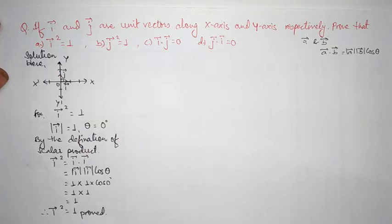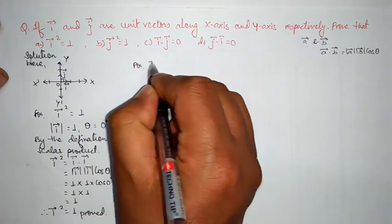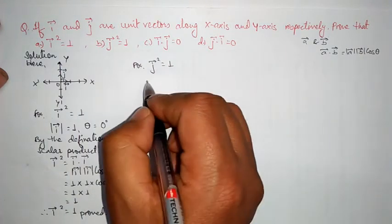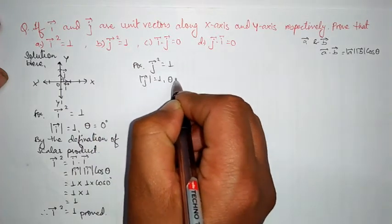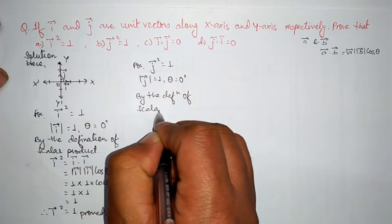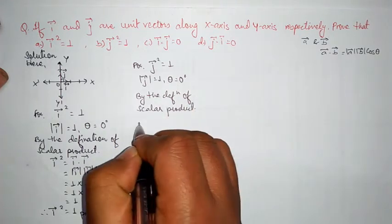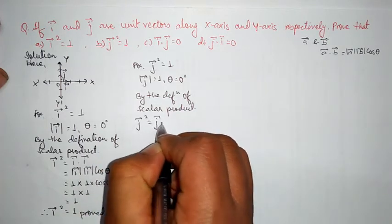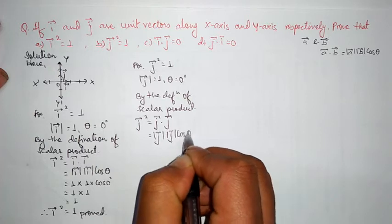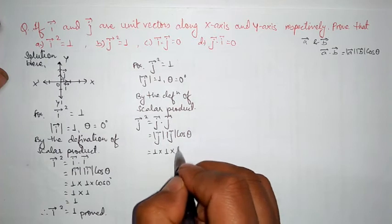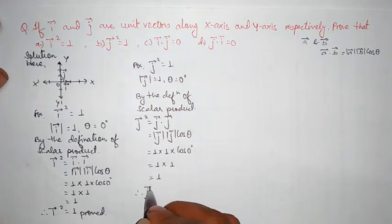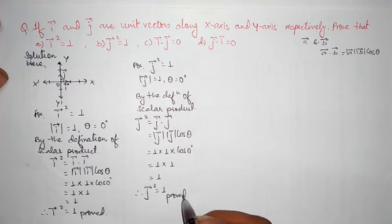Similarly, for j vector squared equals 1: the magnitude of j vector is 1 and the angle between j and itself is also 0 degrees. By the definition of scalar product, j vector squared can be written as j vector dot j vector, which equals magnitude of j into magnitude of j into cos theta. That is 1 into 1 into cos 0 degrees. cos 0 is 1, so 1 into 1 equals 1. Therefore j vector squared equals 1 is also proved.